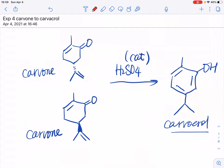Hi everyone, let's review experiment 4, carvone to carvacrol lab this time. We know that in this experiment, R-carvone was the starting material to be catalyzed by sulfuric acid to form carvacrol.